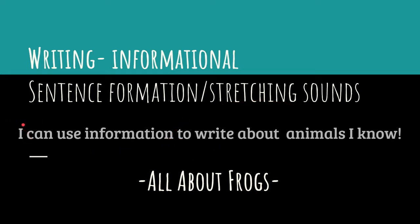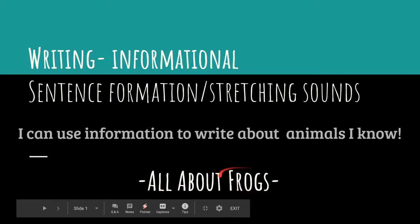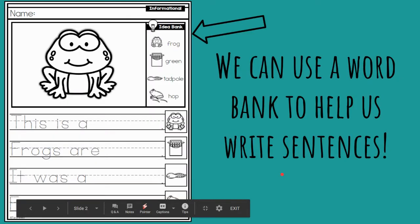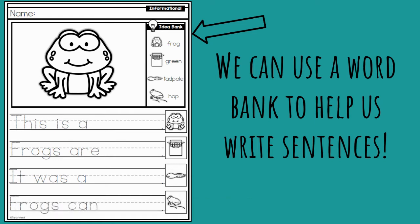So let's read our 'I can,' as usual. My turn, your turn. Here we go. My turn first: I can use information to write about animals I know. Very good. So the animals that we are talking about today are frogs. We already did a little bit of research to talk about the animal, and now we get to focus on writing words to talk about frogs.